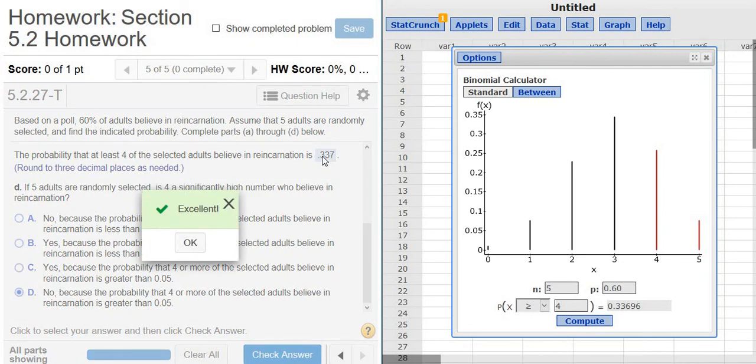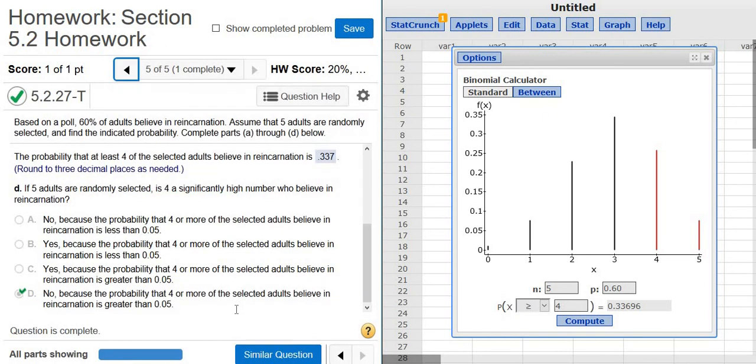So if this number would have been smaller than 0.05, then we would have said yes, because the probability that 4 or more believe is less than 0.05. And I guess that's it. Hope that made sense.